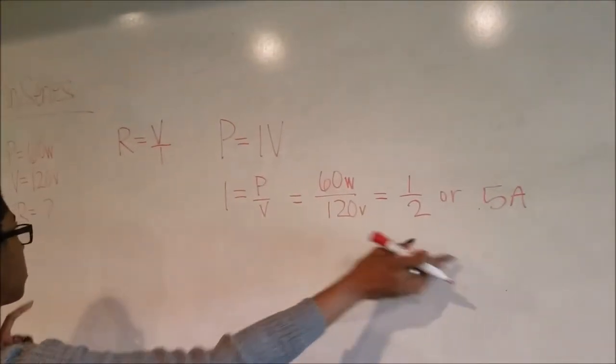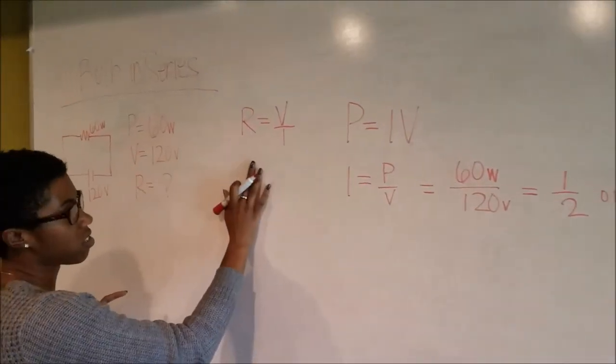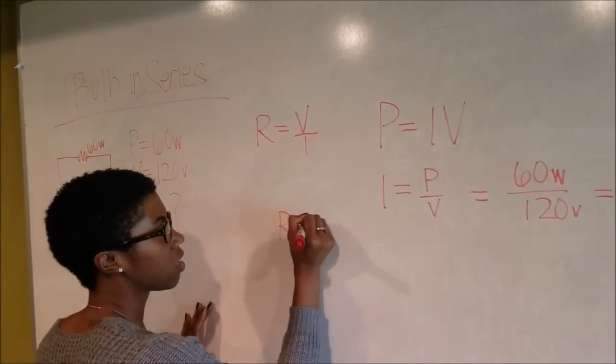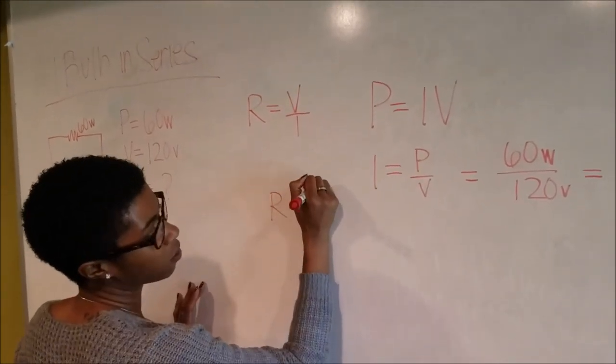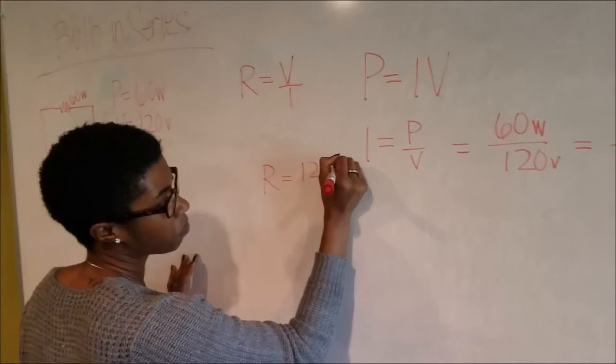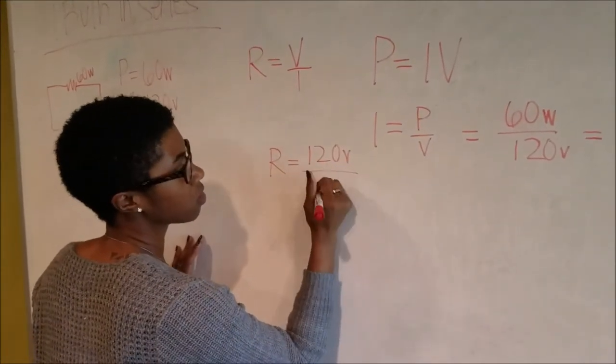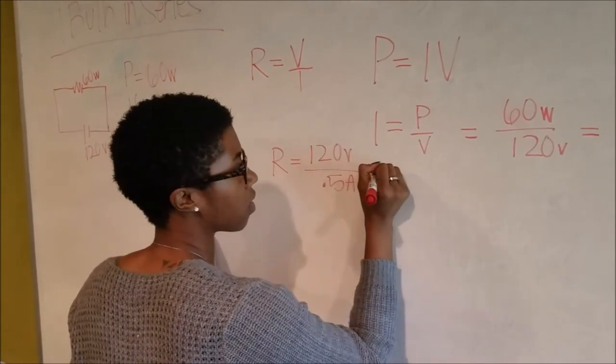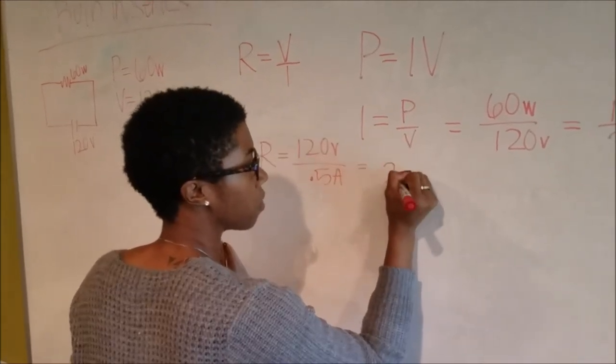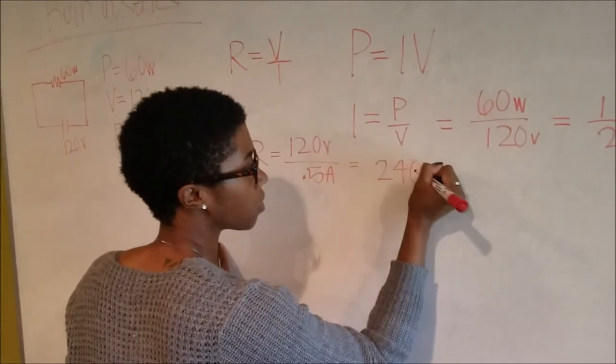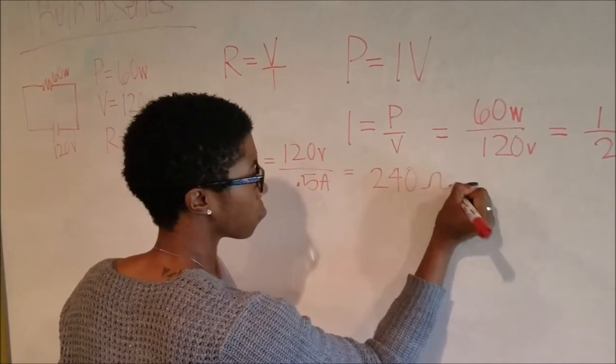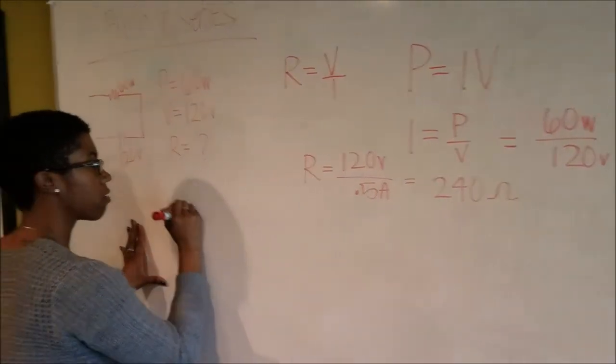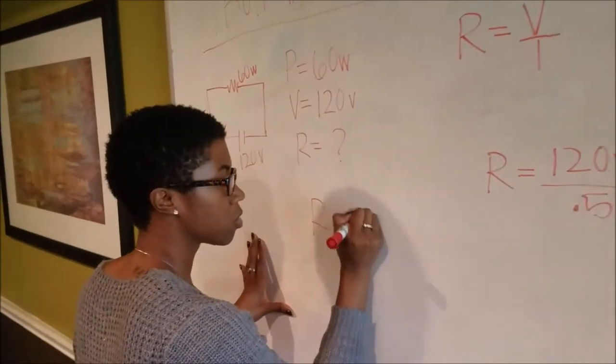Now that we have our current, we can plug our current into the resistance equation. So, with the resistance equals 120 volts over 0.5 amps, our answer will be 240 ohms for our resistance.